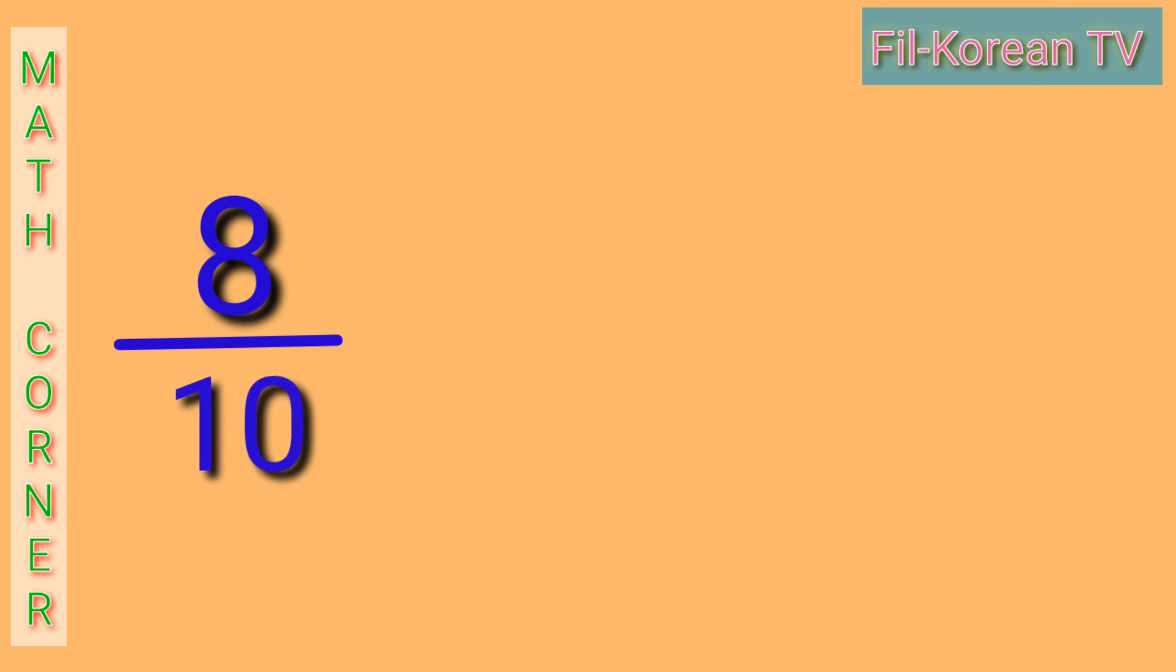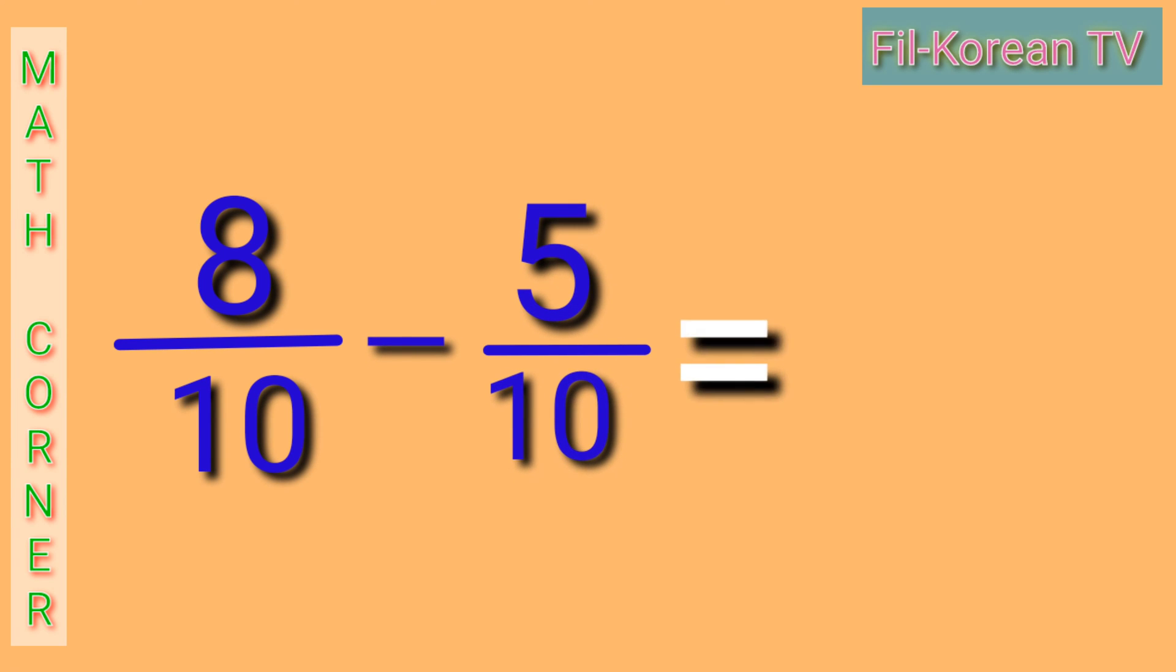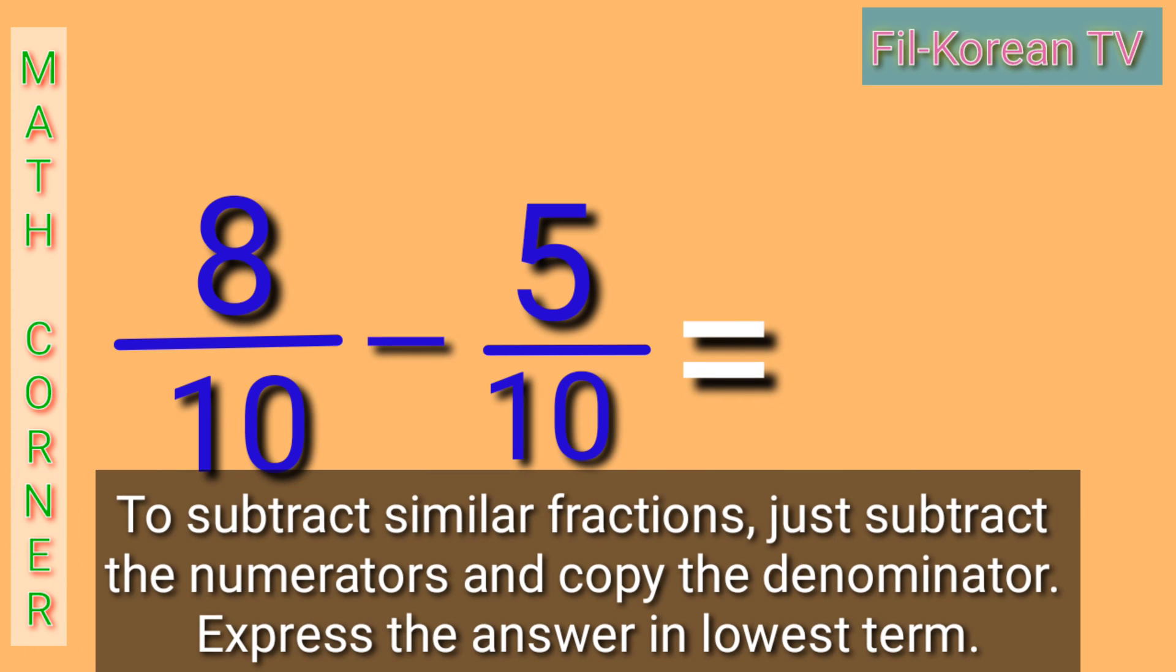Let's take this example. 8 tenths minus 5 tenths equals. To subtract similar fractions, just subtract the numerators and copy the denominator. Express the answer in lowest term.